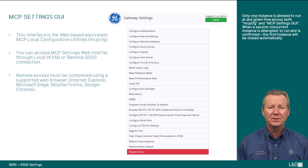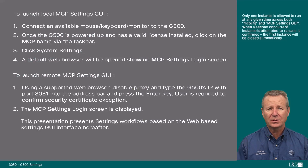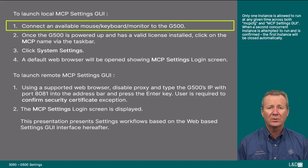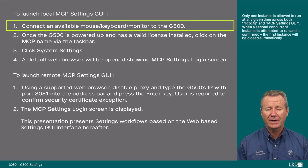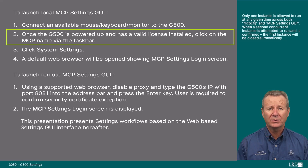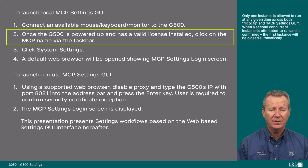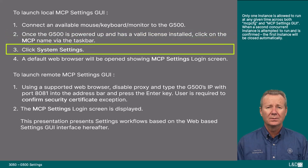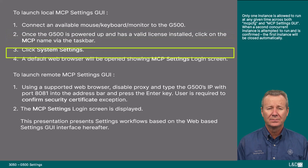The MCP Settings GUI is a web-based interface equivalent of the MCP Local Configuration Utility or MCP CFG. To launch the local MCP Settings GUI: 1. Connect an available mouse, keyboard, and monitor to the G500. 2. Once the G500 is powered up and has a valid license installed, click on the MCP name via the taskbar. 3. Click System Settings. 4. A default web browser will open showing the MCP Settings login screen.